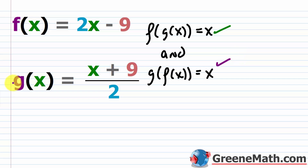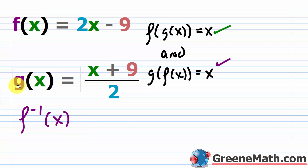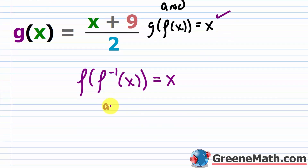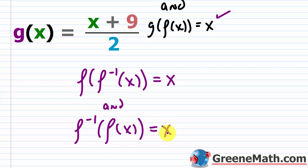You could scratch this out and write this as f inverse of x. In some textbooks, they'll write the notation as f of f inverse of x has to be equal to x, and f inverse of f of x would be equal to x. So again, both of these have to be true. You might see it this way or the other way.